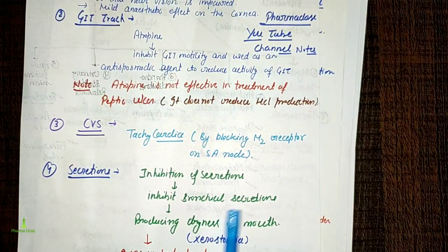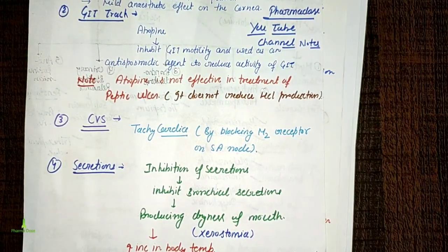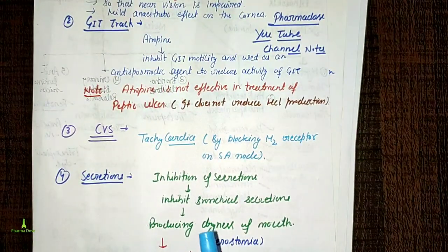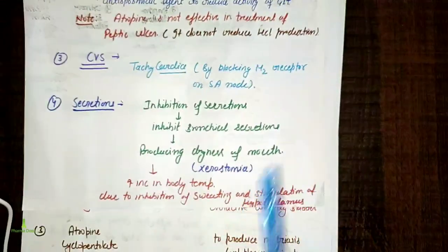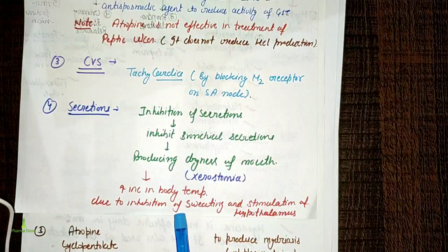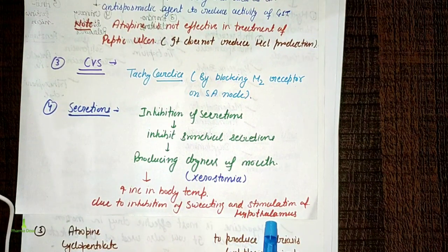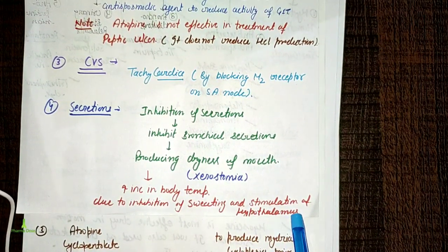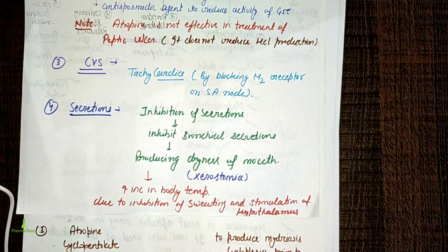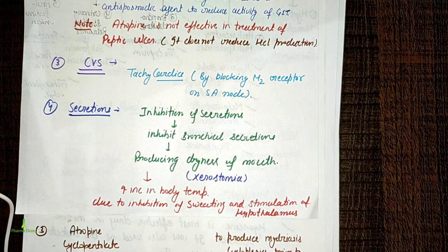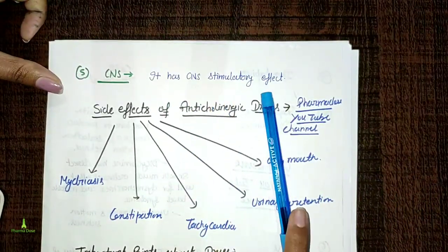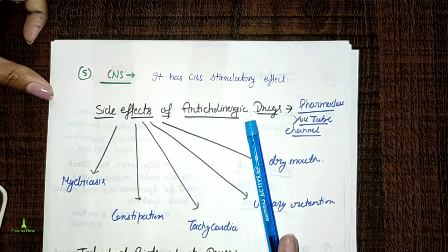Atropine also enhances body temperature due to inhibition of sweating and stimulation of the hypothalamus. Sweating is inhibited, so body temperature increases. Regarding CNS effects, atropine has a CNS stimulatory effect.